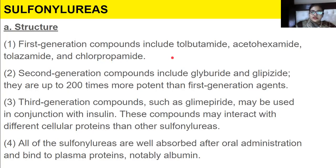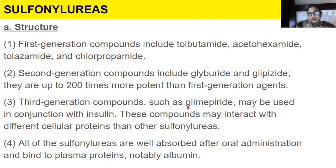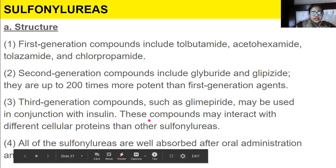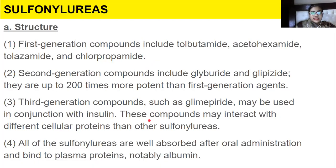Talking about the sulfonylureas and their structure: first generation compounds include those we discussed. Second generation compounds are up to 200 times more potent than the first generation. Third generation compounds — glimepiride — may be used in conjunction with insulin and may interact with different cellular proteins than other sulfonylureas. All sulfonylureas are well absorbed after oral administration and bind to plasma proteins, notably albumin.